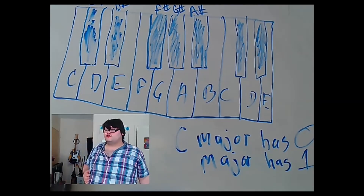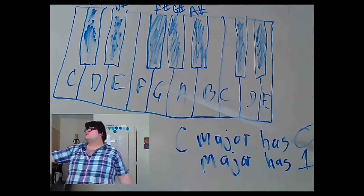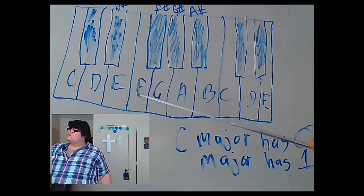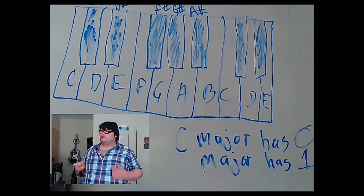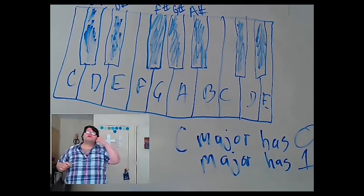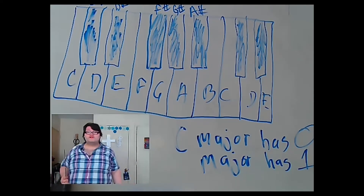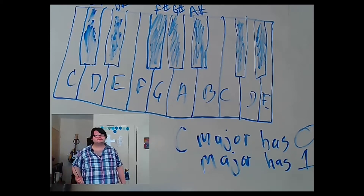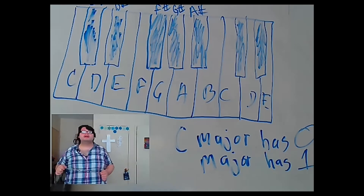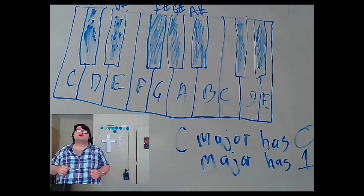Now we're going to check to see which note has one sharp as we count: one, two, three, four, five. We point to the G. So that means if we play out the G major scale, you will see one sharp in the scale. Here's where it gets interesting — how do we know what note gets sharped?